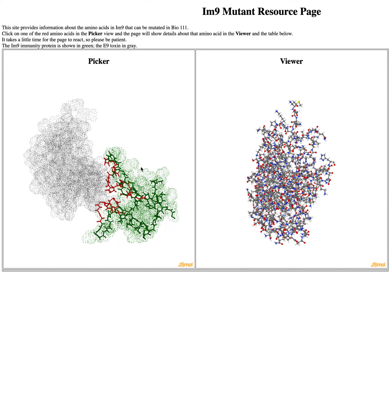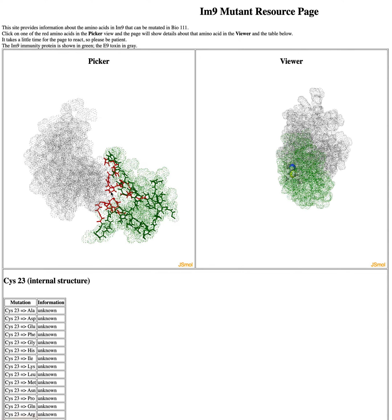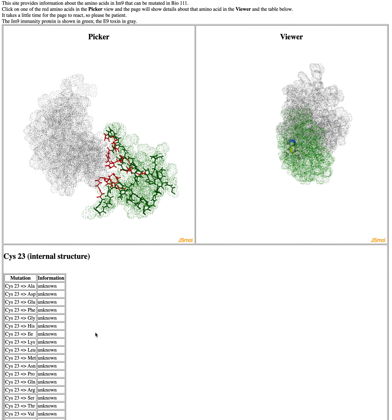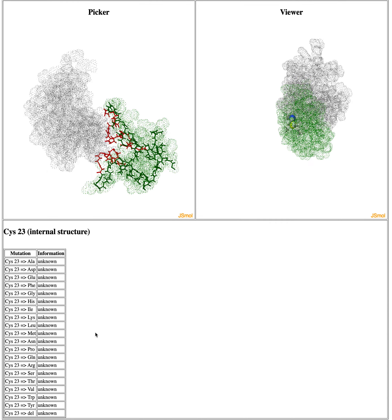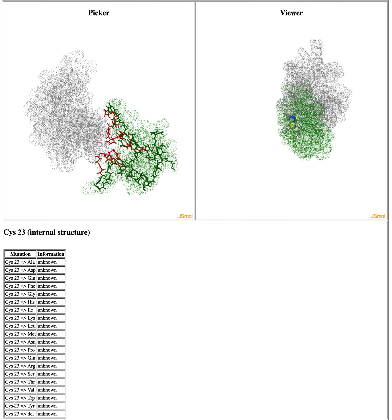What you can do is mouse over, and as you see here, this says cys23. That's cysteine at position 23, and it's red. If we click on that, it takes a second for the interface to respond. If you scroll down, you can see all the possible mutations we could have for cys23.